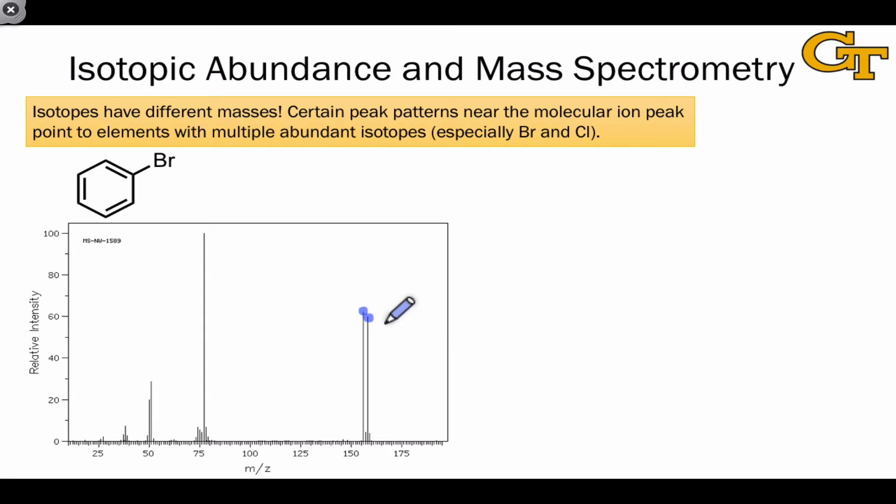Either the true molecular mass is 158 and this 156 peak corresponds to a fragment involving loss of two mass units, which doesn't make much sense, or there's an isotopic abundance effect going on. As you've probably guessed, this is due to isotopic abundance effects.